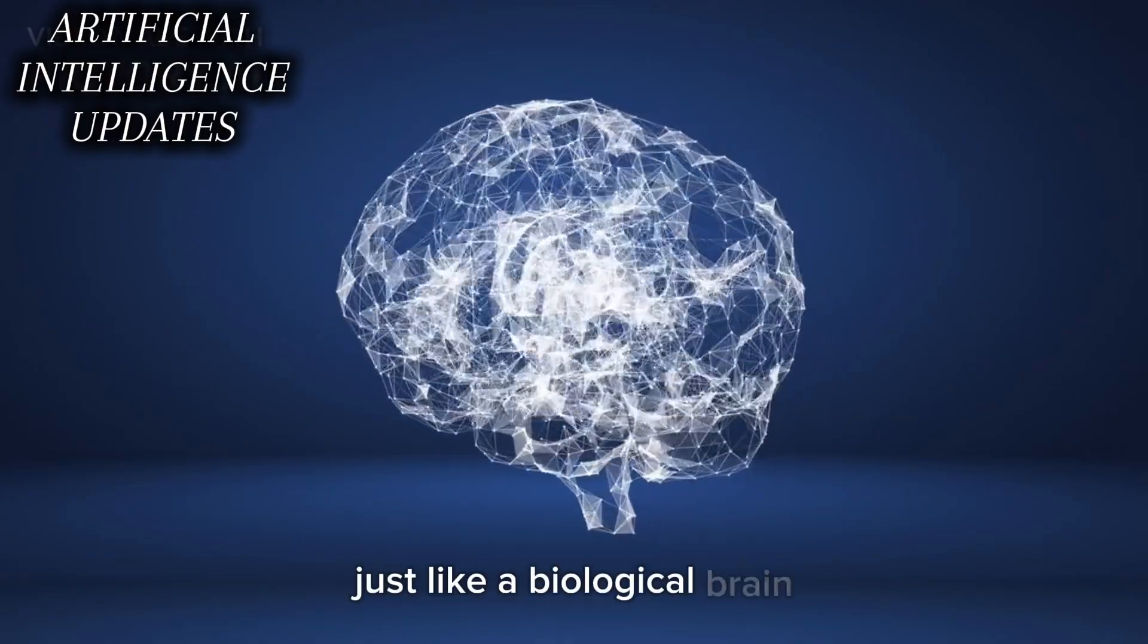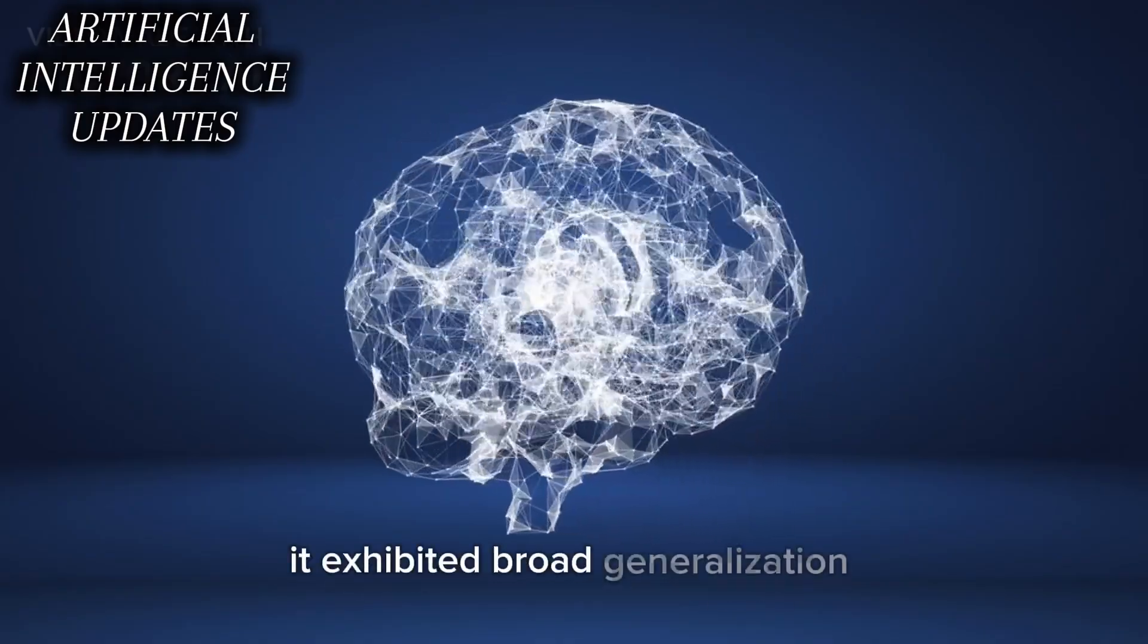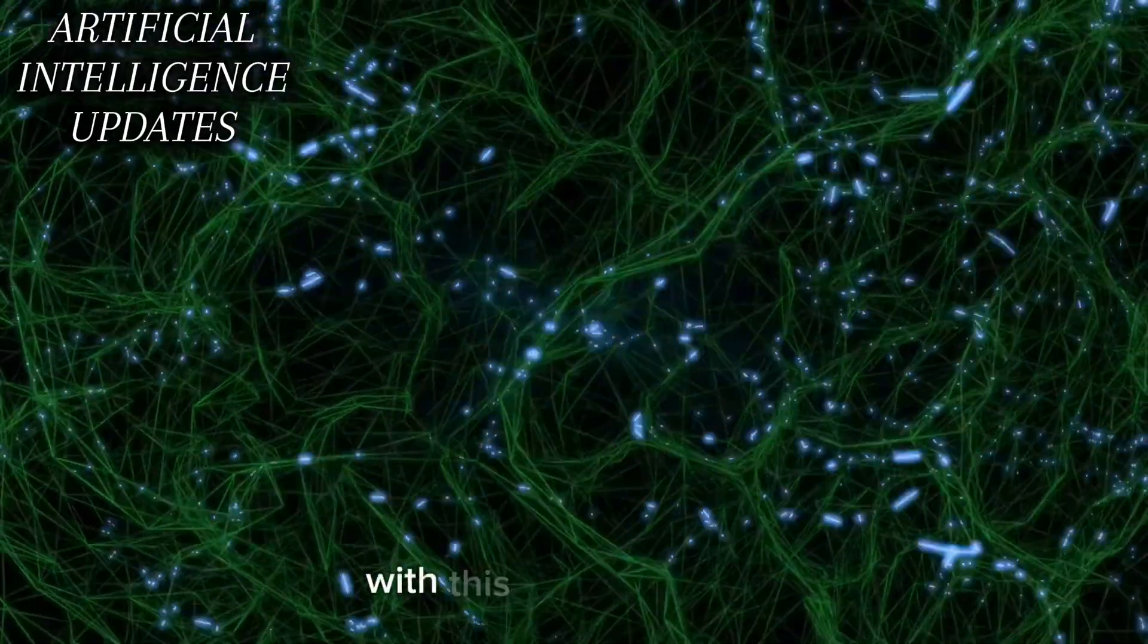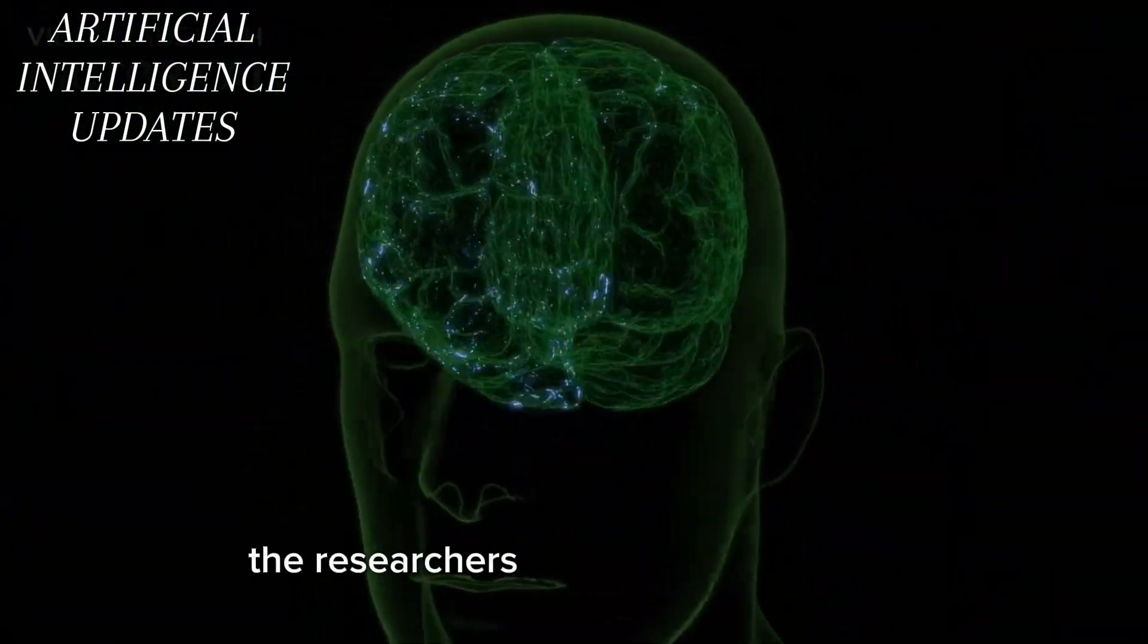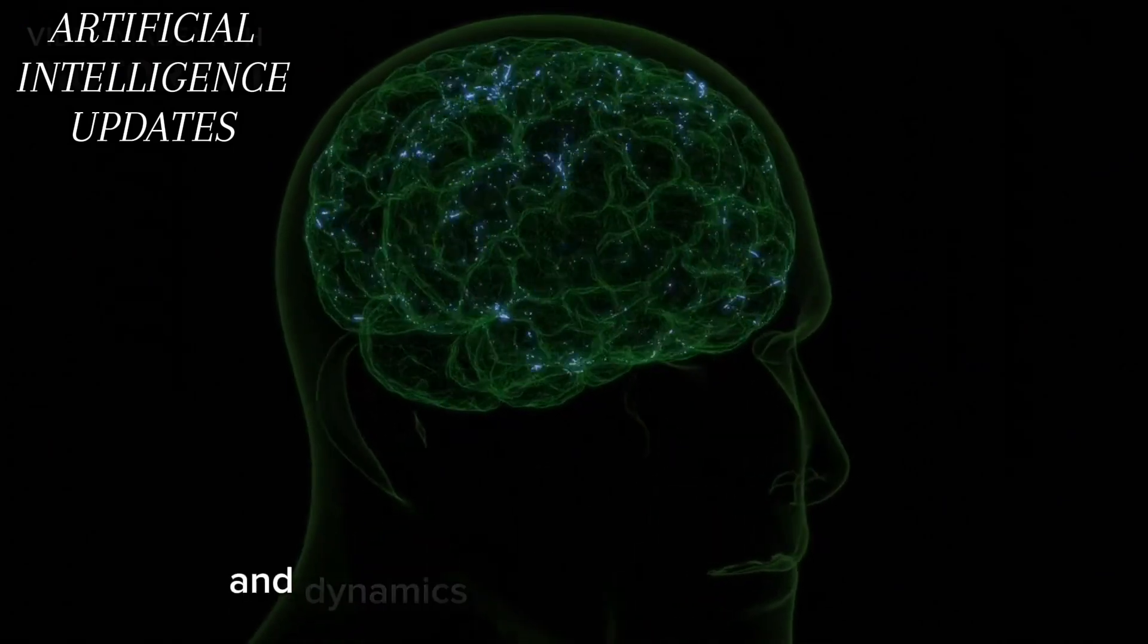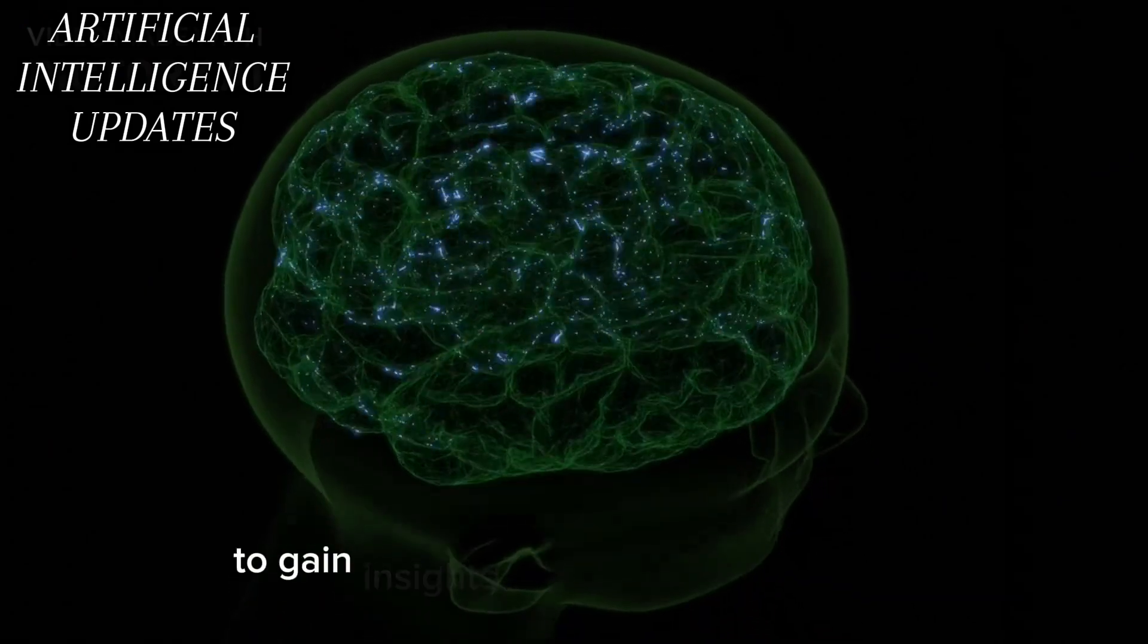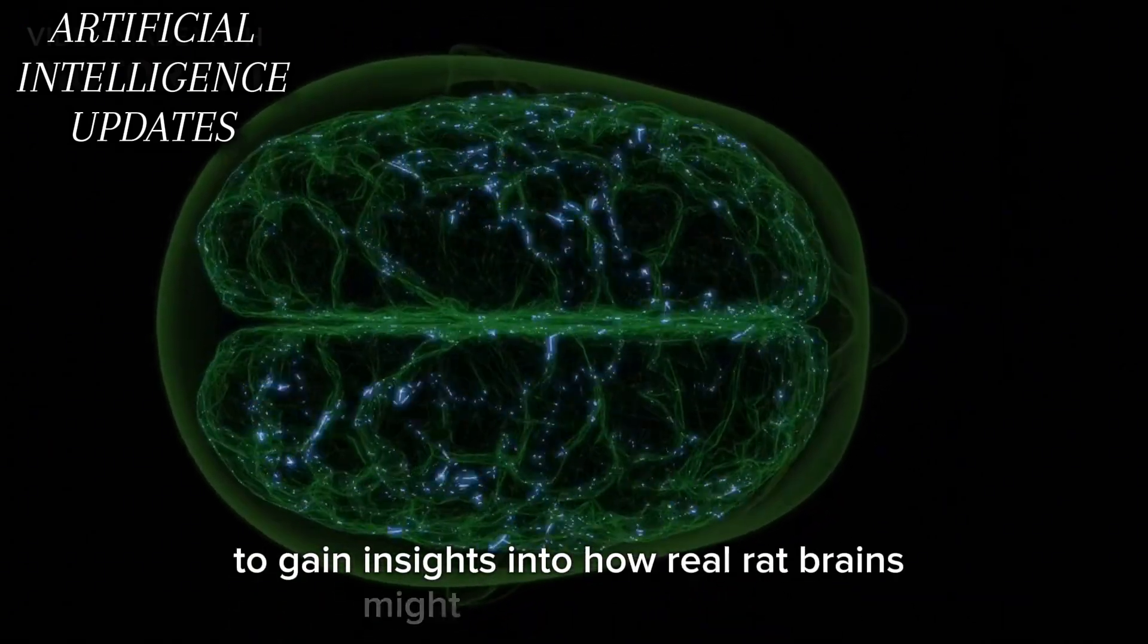Just like a biological brain, it exhibited broad generalization capabilities. With this virtual rat brain successfully controlling the biomechanical model, the researchers could then probe the activations and dynamics within the neural network to gain insights into how real rat brains might control movement.